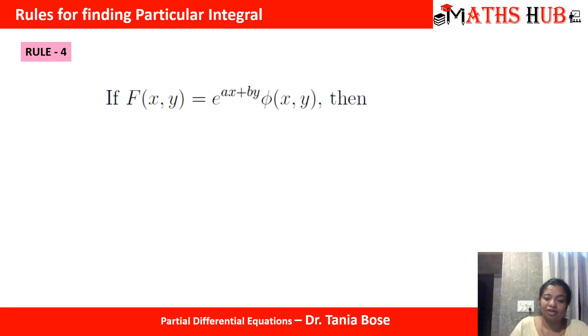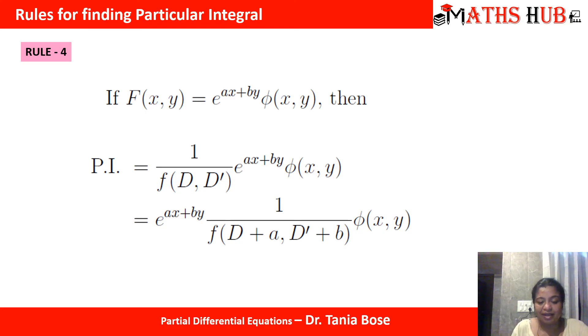In rule number 4 we have a product function where one function is an exponential function e to the power ax plus by and the second function can be any function in x and y. The rule says replace d by a and d dash by b. When you make this replacement, the exponential term will move out and we are left with the function phi. Whatever function is phi, depending on that you need to solve the particular solution.